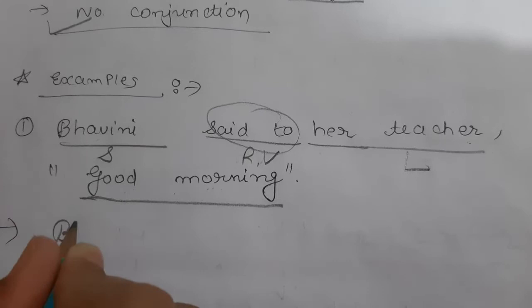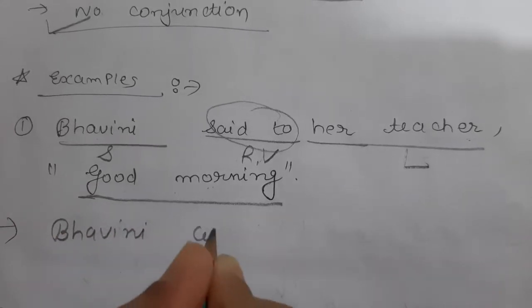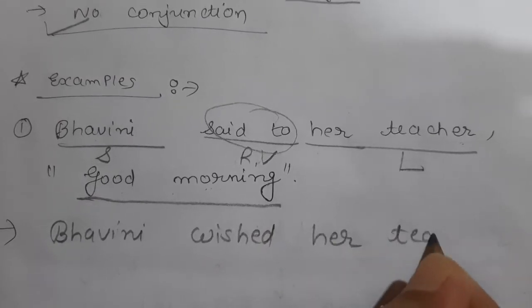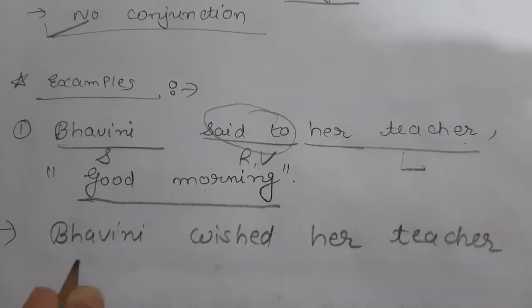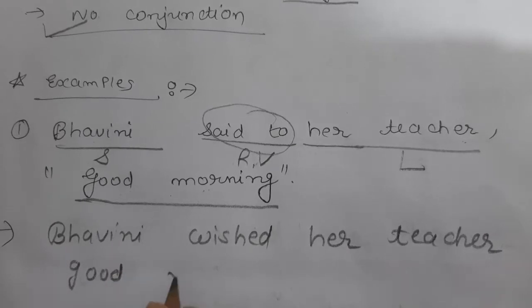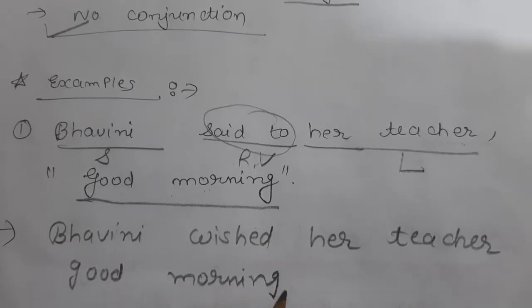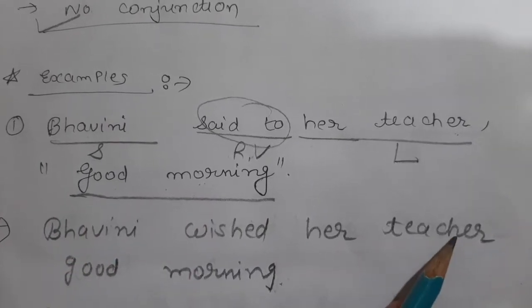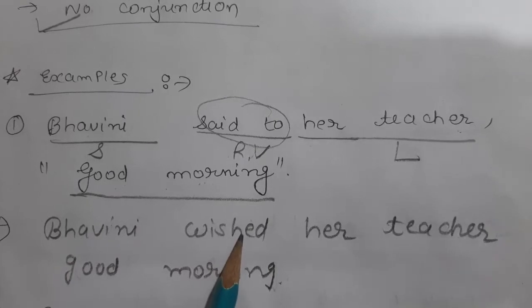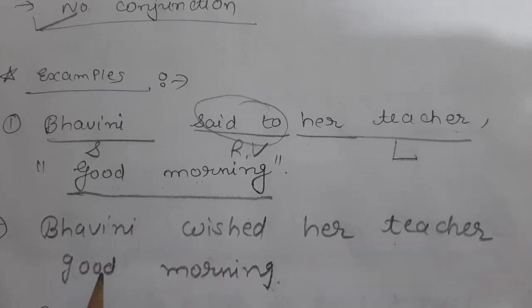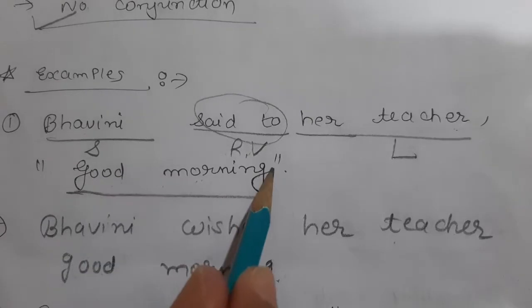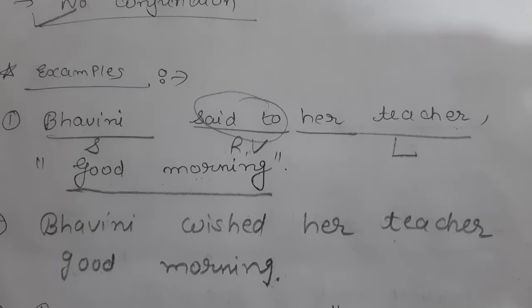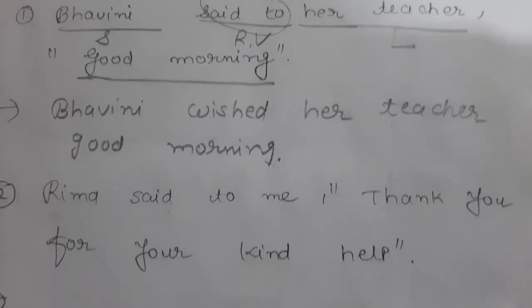Let's write: Bhavini wished her teacher good morning. As I told you, no conjunction. Directly, you will write whichever word is given in the reported speech. You will write: speaker, reporting verb, listener, and directly join the word given in reported speech — without any conjunction and without any comma. Just a full stop.